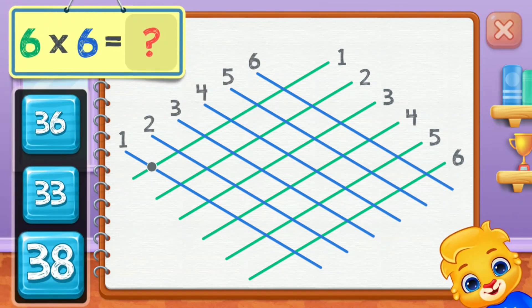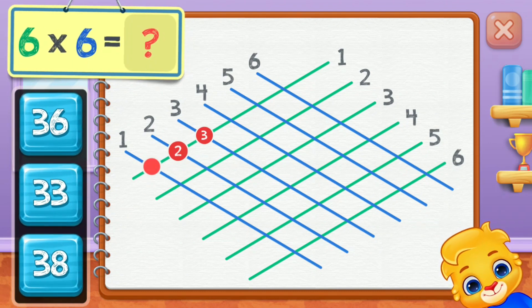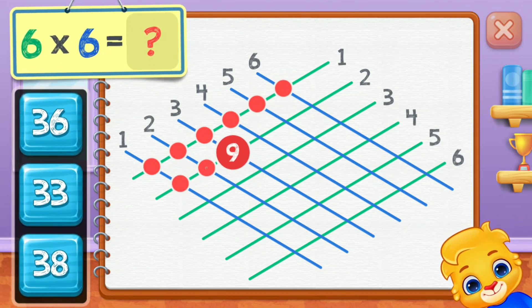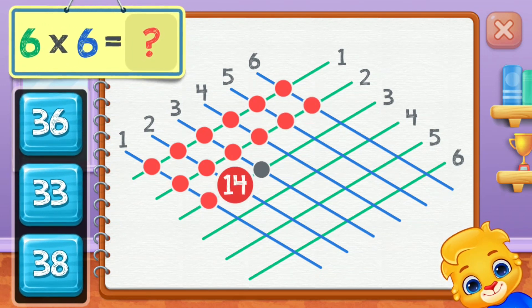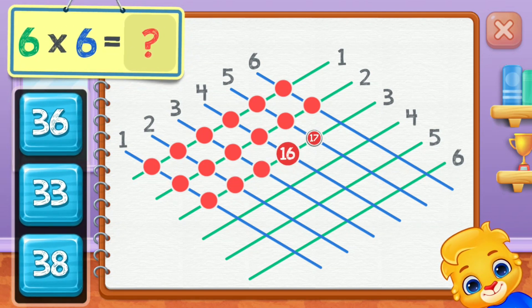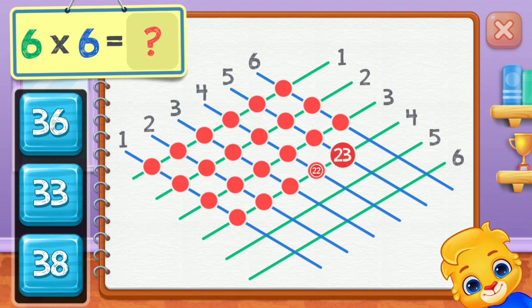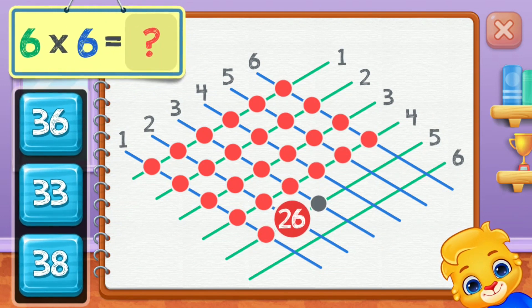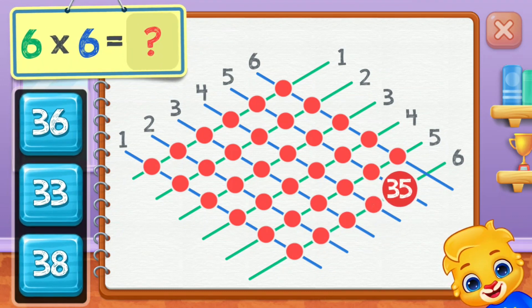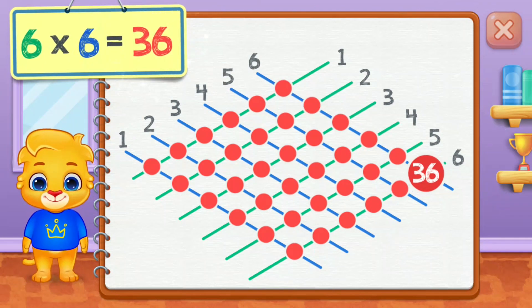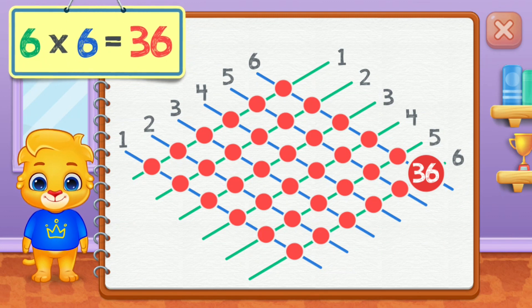Two, three, four, five, six, seven, eight, nine, ten, eleven, twelve, thirteen, fourteen, fifteen, sixteen, seventeen, eighteen, nineteen, twenty, twenty-one, twenty-two, twenty-three, twenty-four, twenty-five, twenty-six, twenty-seven, twenty-eight, twenty-nine, thirty-one, thirty-two, thirty-three, thirty-four, thirty-five, thirty-six. Six times six equals thirty-six.